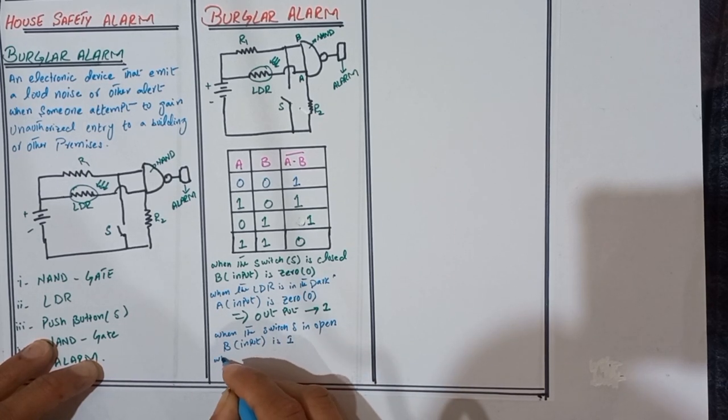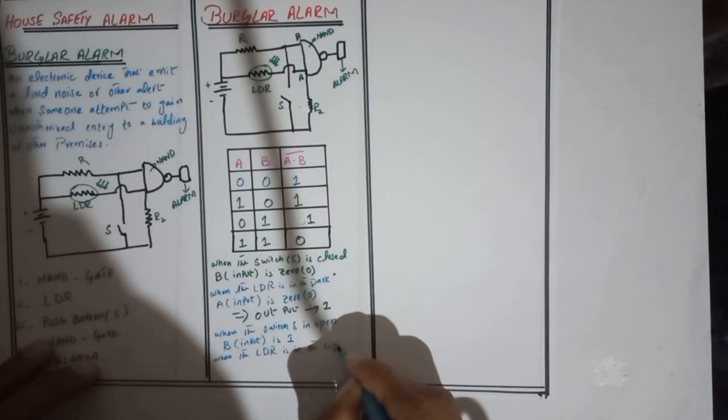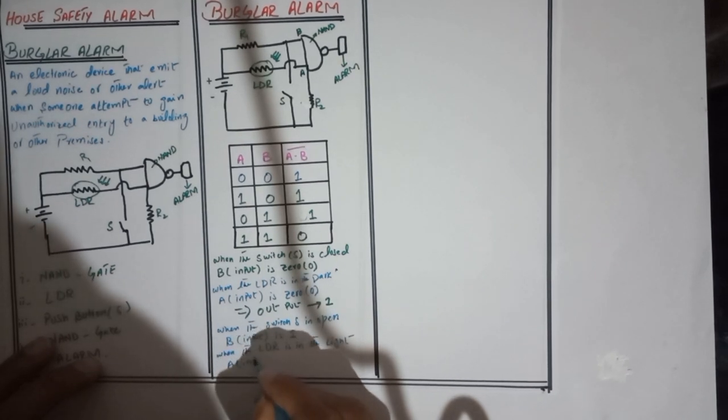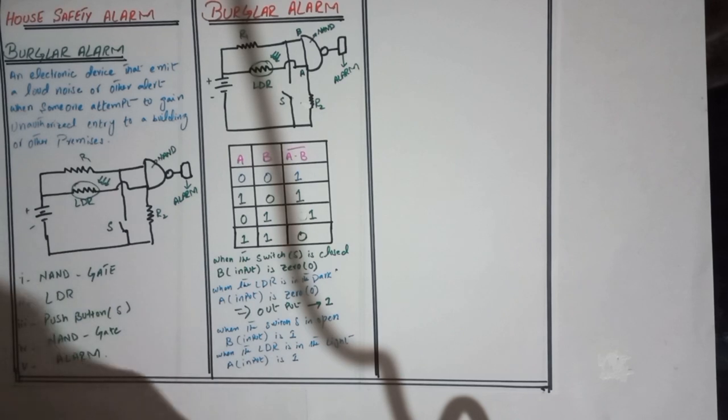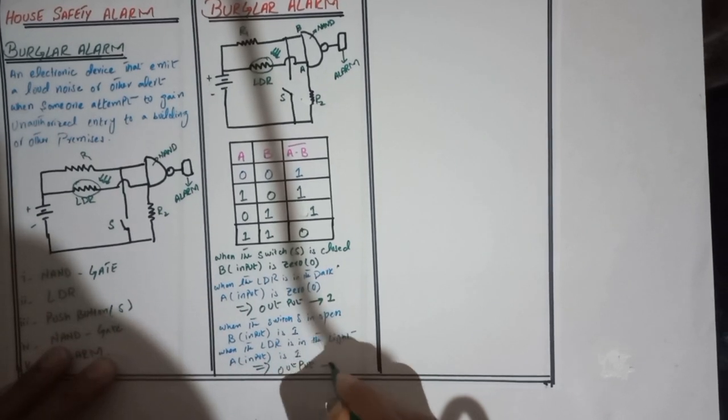When the LDR is in the light, then A input is one. So in output we get zero.